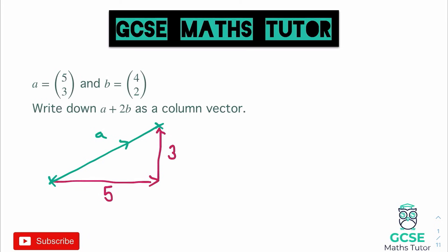We've got A plus 2B, or 1A plus 2B. That means doing movement A — across 5 and up 3 — and then doing movement B twice: across by 4, then across another 4, and up by 2, then up another 2. In order to combine all of that and show the total movement, we can just do it numerically.